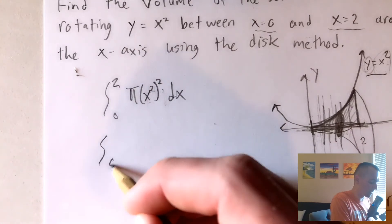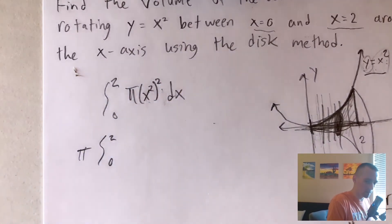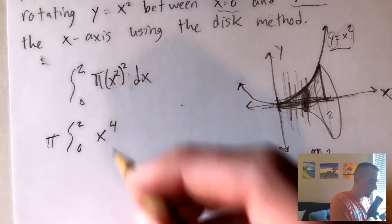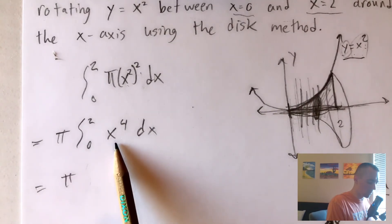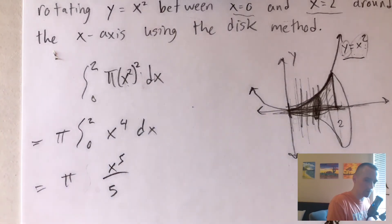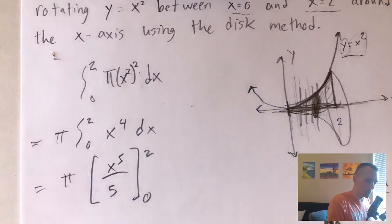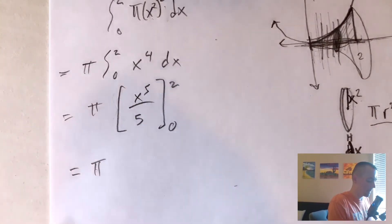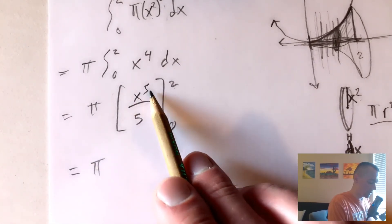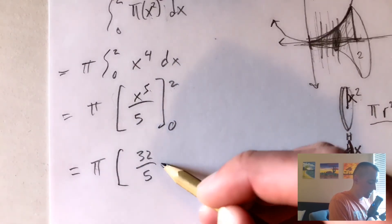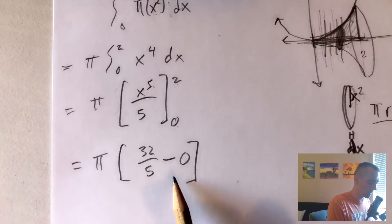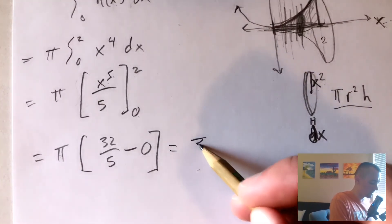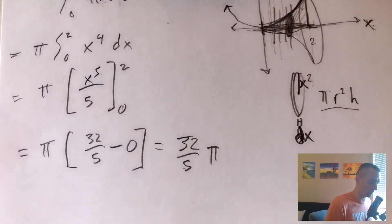Let's simplify and evaluate. We pull out pi as a constant, and x squared squared equals x to the fourth. So we have pi times the integral from 0 to 2 of x to the fourth dx. Integrating x to the fourth: raise the power by one to get x to the fifth, divide by the new power, giving x to the fifth over five, evaluated from 0 to 2. Plugging in 2 gives 32 over 5; plugging in 0 gives 0. So the result is 32 over 5 times pi, or 32 pi over 5.